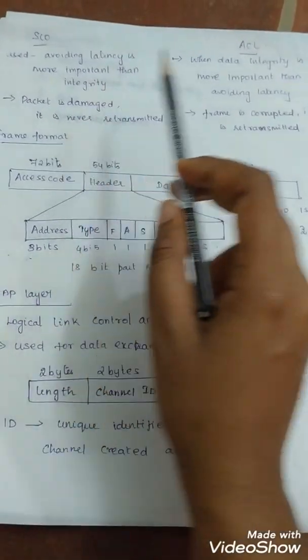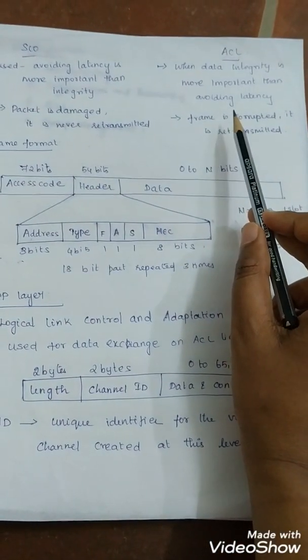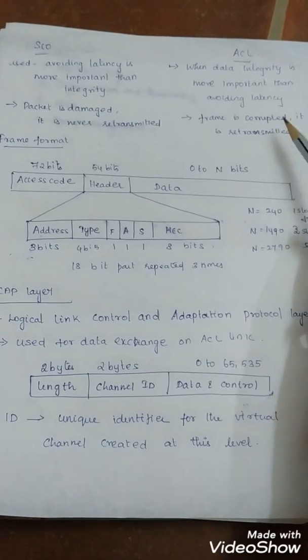ACL is used when data integrity is more important than avoiding latency. If a packet is damaged in this physical link, it is never retransmitted. Here the frame is corrupted or damaged, it is retransmitted the frame again.